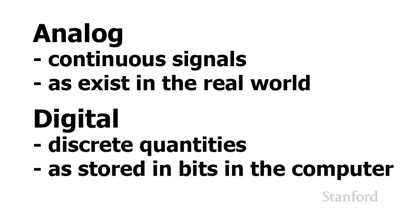Analog refers to continuous signals. The real world is filled with continuous quantities. In contrast, digital means storing information in discrete quantities. What digital images and digital music are all about is taking the real analog world and converting it into discrete quantities we can store inside the computer. There's always this process of taking that real-world analog entity and converting it to the digital world.